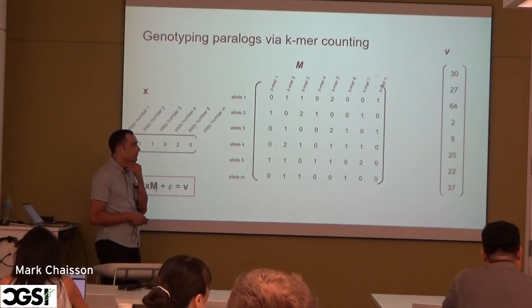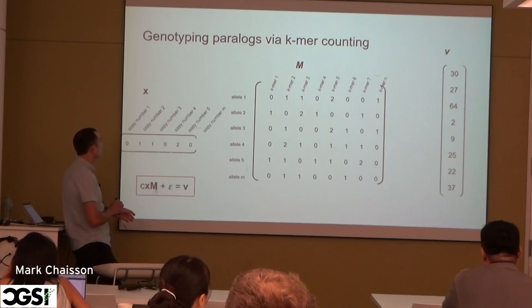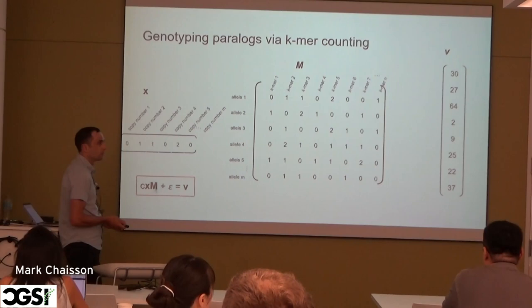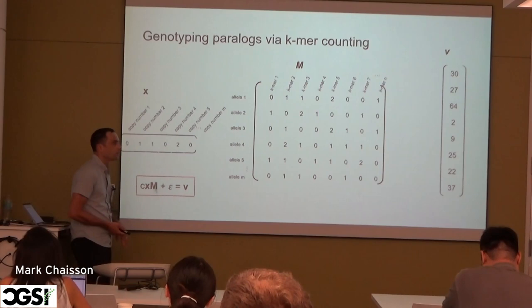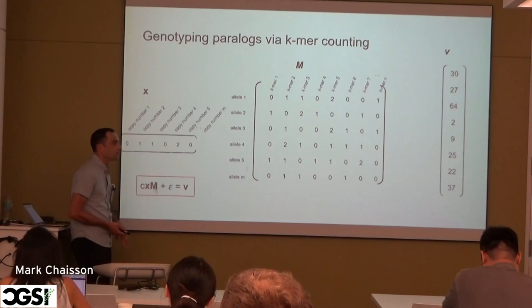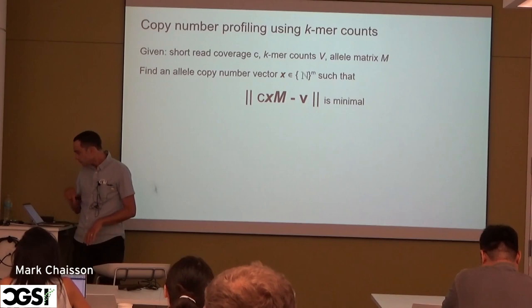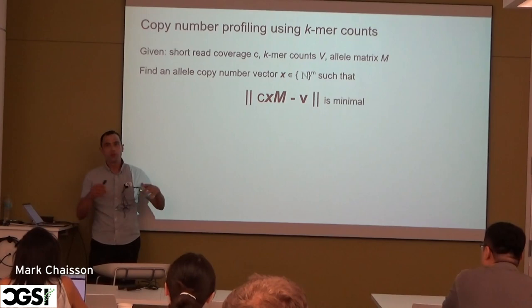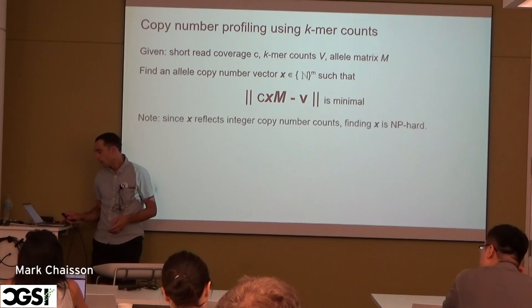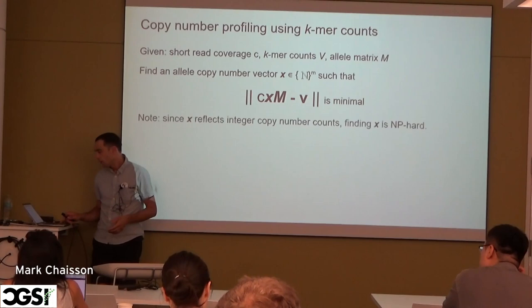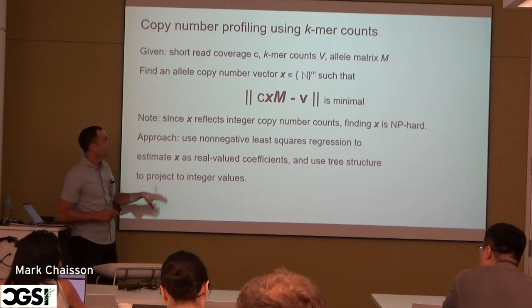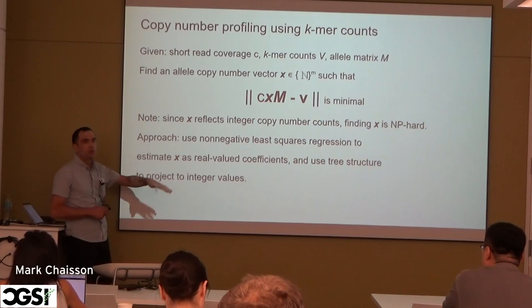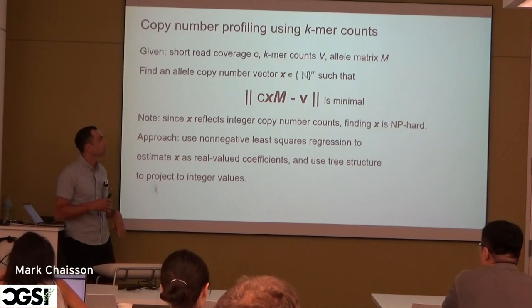Audience member: Do you have any constraints on the row sums of X? Speaker: Just positivity — it could be that you estimate many different positives. We just want to find a maximum likelihood estimate for X unconstrained beyond positivity. So our input is the short-read coverage, the k-mer counts vector V, and the allele matrix M. We minimize this expression, where X is copy numbers as integers — forming an integer linear program. For now, we estimate X using real-valued coefficients, then look at the phylogeny of genes to group coefficients and estimate final copy number.